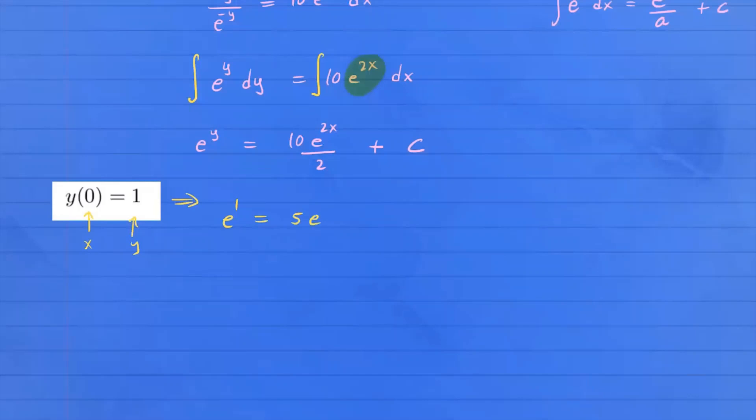We have e^1 equals 10 over 2, I can write that as 5, times e^(2×0) plus c. We know e^0 equals 1. On the left-hand side you have e, on the right-hand side you have 5 plus c, which means c has to be e minus 5. That's the value for c.